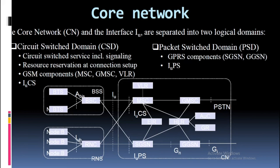The Core Network (CN) and the interface Iu are separated into two logical domains: Circuit Switched Domain (CSD), covering circuit switched services including signaling and resource reservation at connection setup (GSM components: MSC, GMSC, VLR via Iu-CS), and Packet Switched Domain (PSD), covering GPRS components such as SGSN and GGSN via Iu-PS.